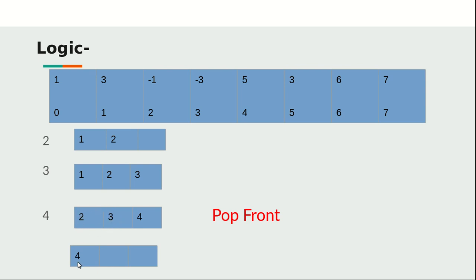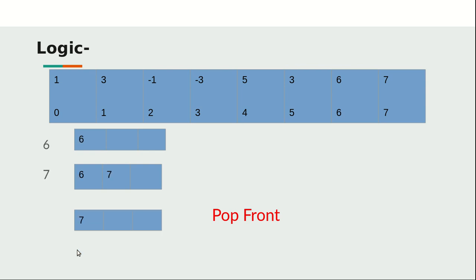At index five, the value is three, which is less than five, so we keep it — deque now has four and five. At index six, the value is six, which is greater than the previous values, so we remove four and five and keep only six. At index seven, the value is seven, which is greater than six, so we pop six and keep only seven.